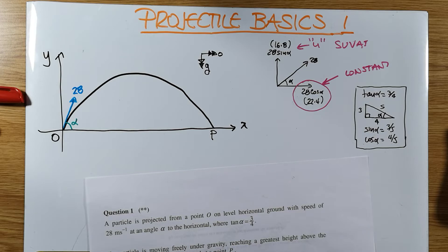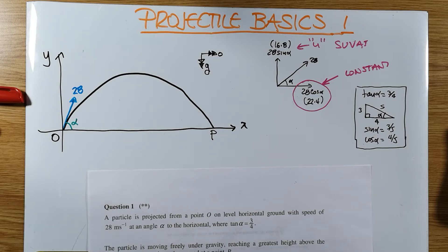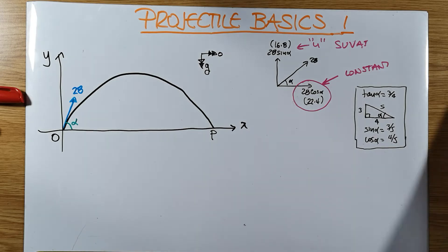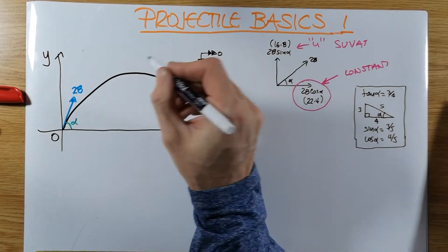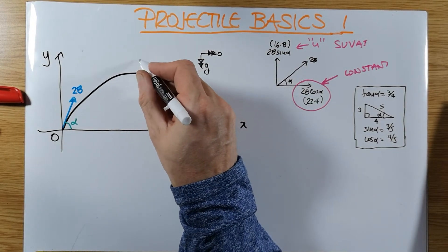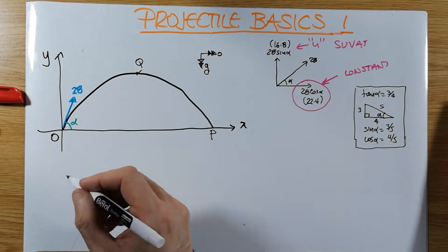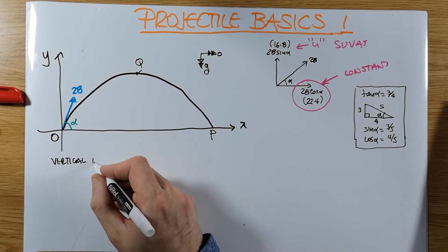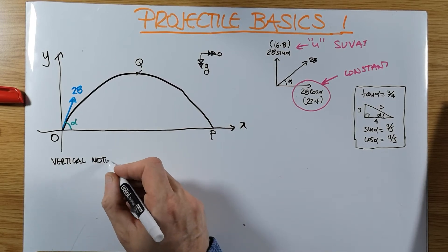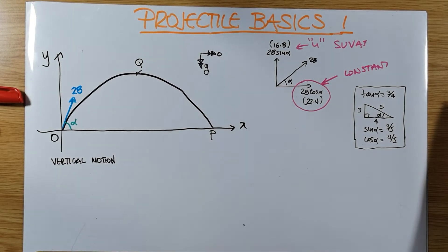So let's get going now and answer the question bit by bit. So first of all, part A. Part A, find the time it takes for the particle to reach the greatest height above the ground. So in other words, how long does it take to go from O up to this point here, let's call this point Q. So we're going to look at the vertical motion.